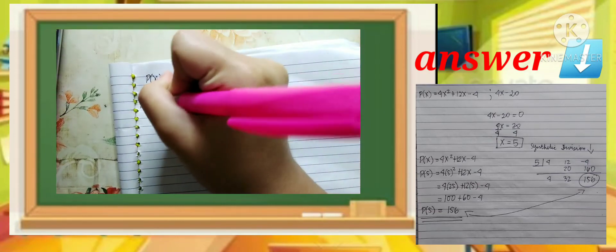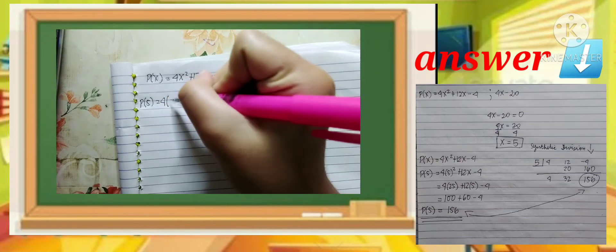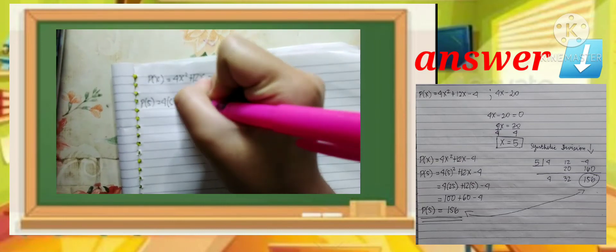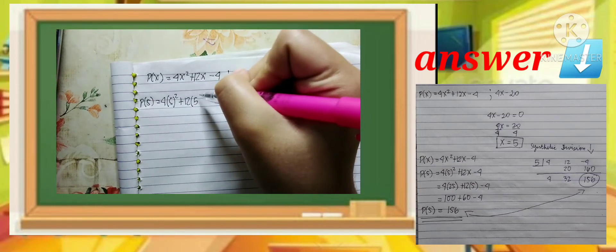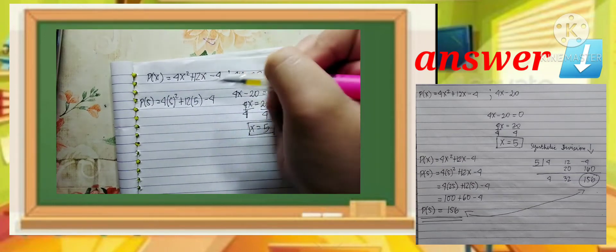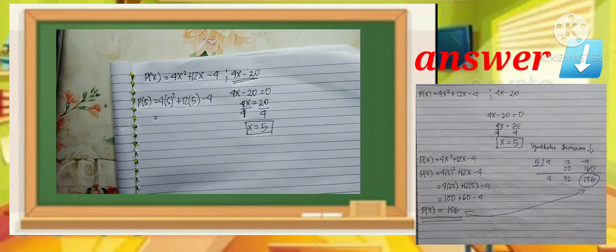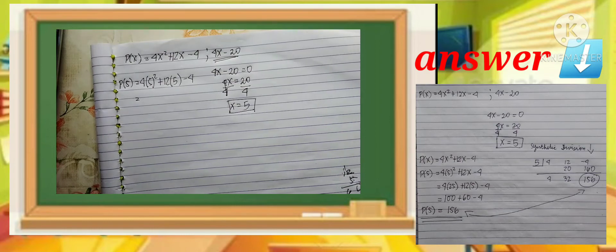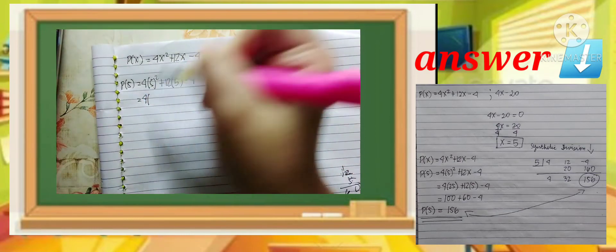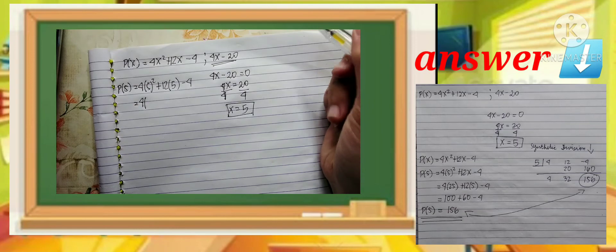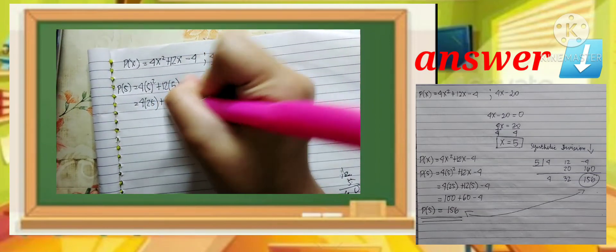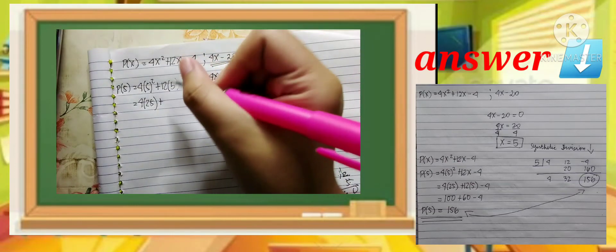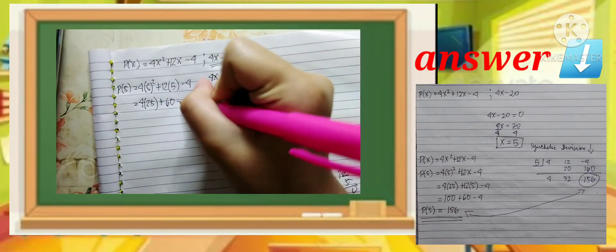So p(5) equals 4(5)² + 12(5) - 4. Let's solve it. 4 times 5 squared, which is 25, plus 12 times 5 equals 60, minus 4.